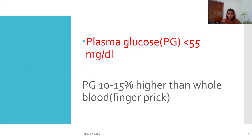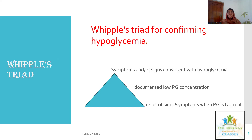Please note that plasma glucose is around 10 to 15 percent higher than whole blood — the fingerprick blood we routinely do when a patient comes to the ER. Now, the Whipple's triad helps us confirm hypoglycemia: there are symptoms or signs consistent with hypoglycemia, a documented low plasma glucose concentration, and relief of symptoms once the plasma glucose is normalized. If these three come together, this is the Whipple's triad, which helps in the diagnosis of hypoglycemia.